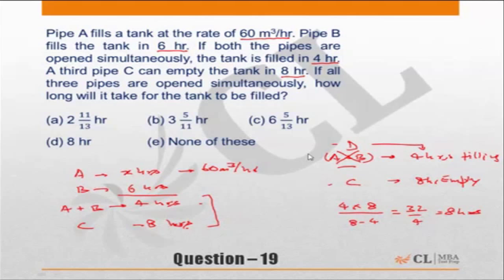Alternately, you could say A plus B, or D, fills up the tank in 4 hours, so that means it will fill up 25 percent of the tank in an hour. And C empties the tank in 8 hours, that means in one hour it will empty 12.5 percent of the tank. Or effectively, I can say 12.5 percent of the tank will get filled up when all the pipes are open together. So 12.5 percent of the tank gets filled up per hour, that means to fill up the tank I will need 8 hours.